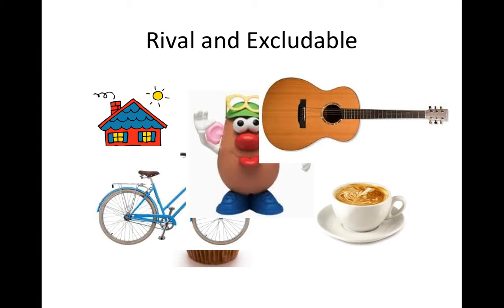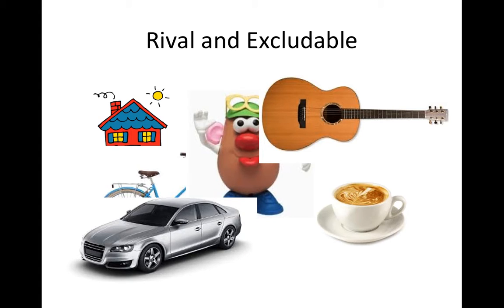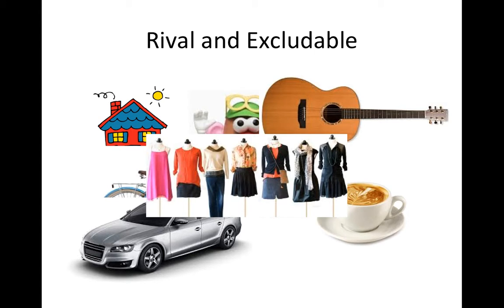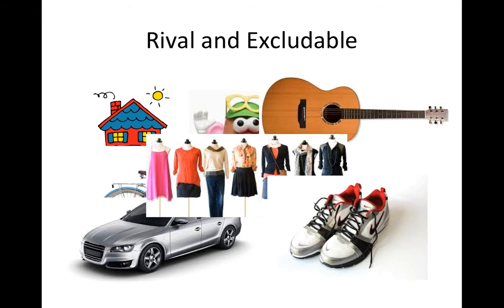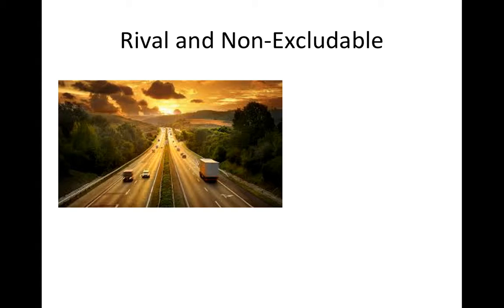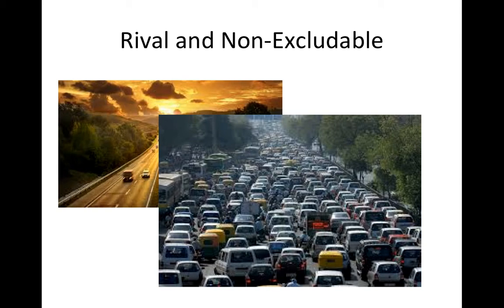If you think some of these goods are not rival — in the sense that if you consume them, someone else could as well — you are right, but ask yourself why used versions of these products cost less than new ones. The reason is that you have used up some of the product, which is what makes it rival. An example of a good that is rival but non-excludable is a public road: it is not possible to prevent people from using it, but if enough people try to use it at the same time, its rival nature becomes obvious.